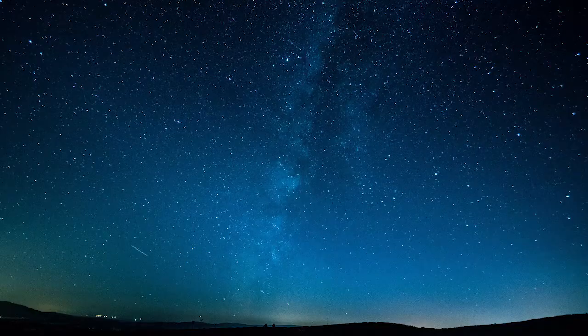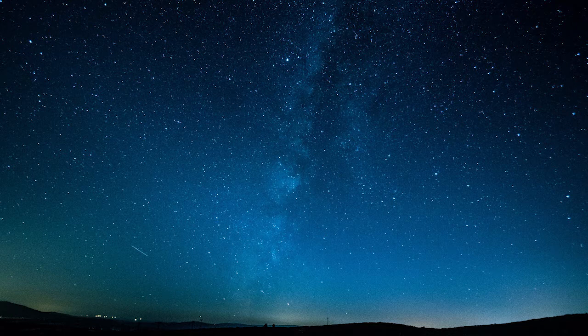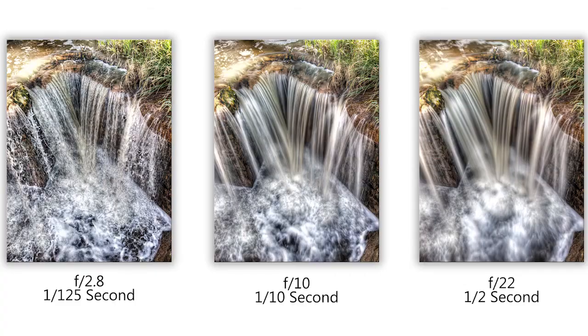The shutter speed is exactly that — it's the length of time that your shutter is open allowing light into the camera. A very slow shutter speed allows the capture of images even in low light conditions, such as night skies or celestial photography, while a fast shutter speed helps to freeze objects, making high speed photography possible.